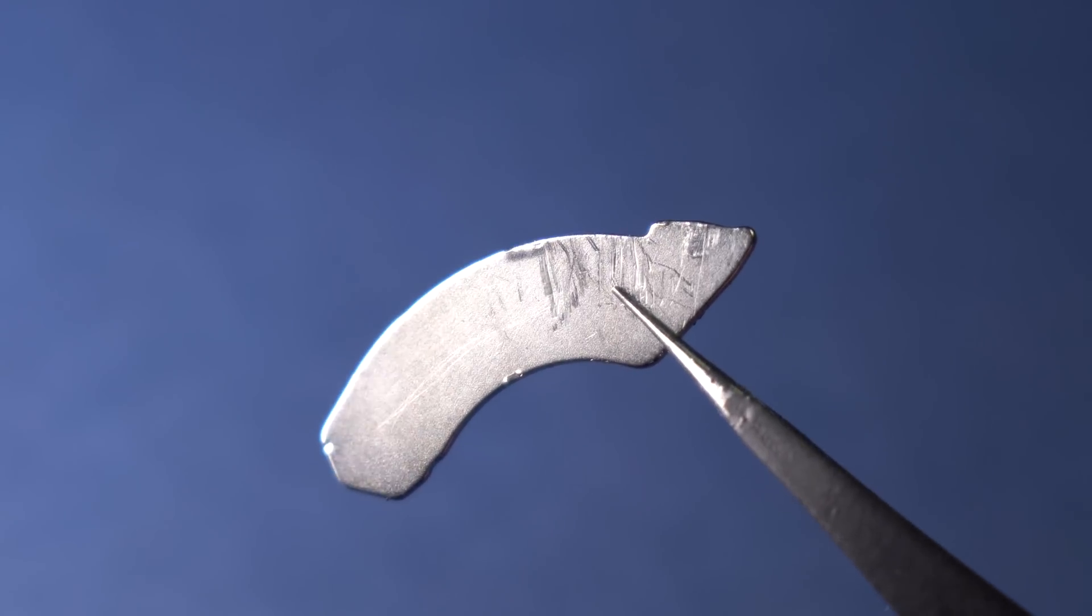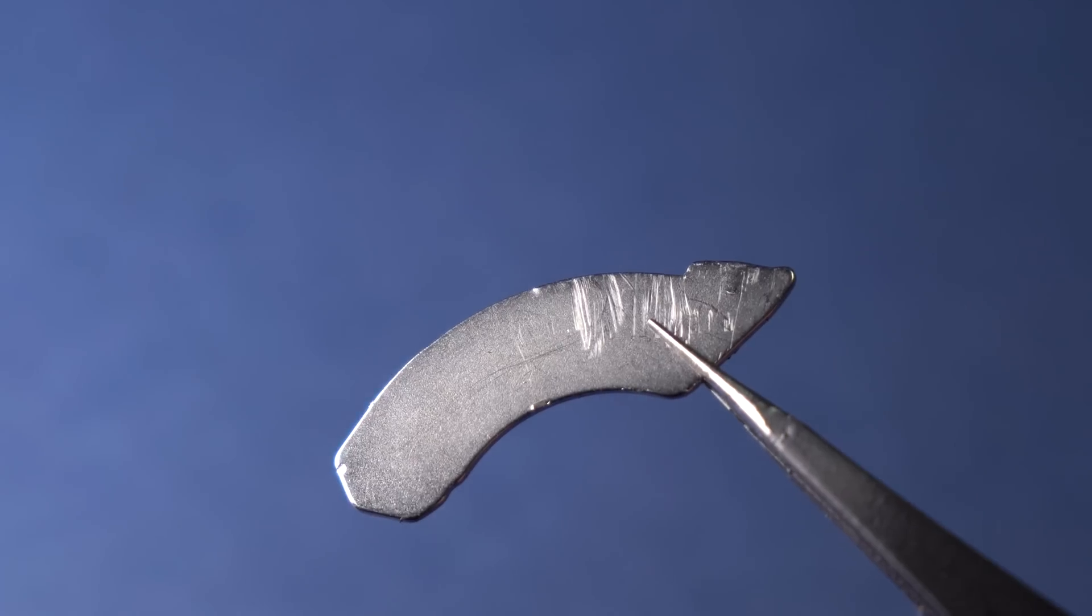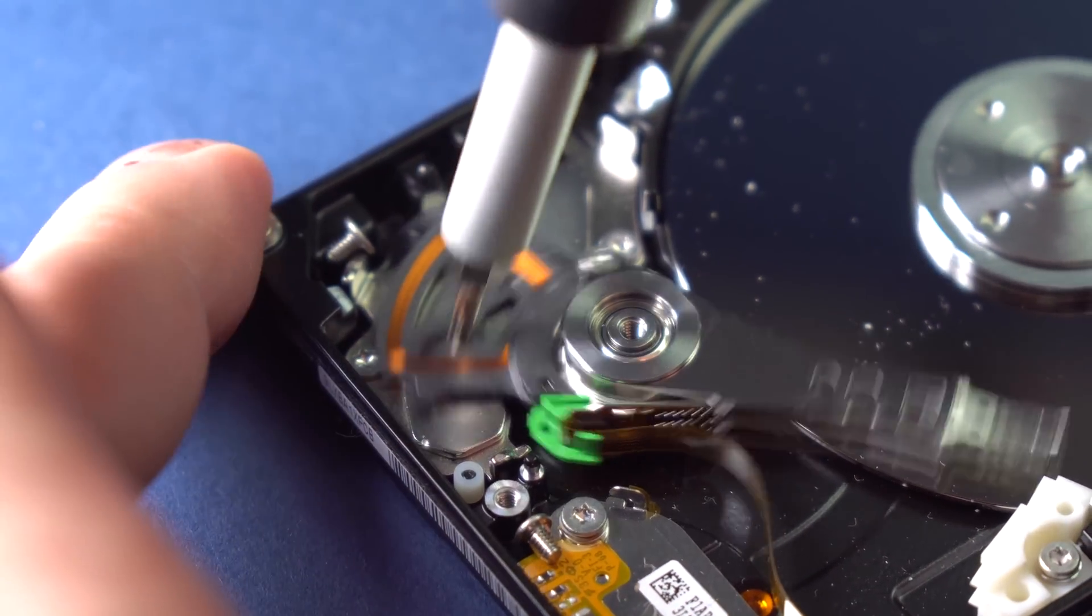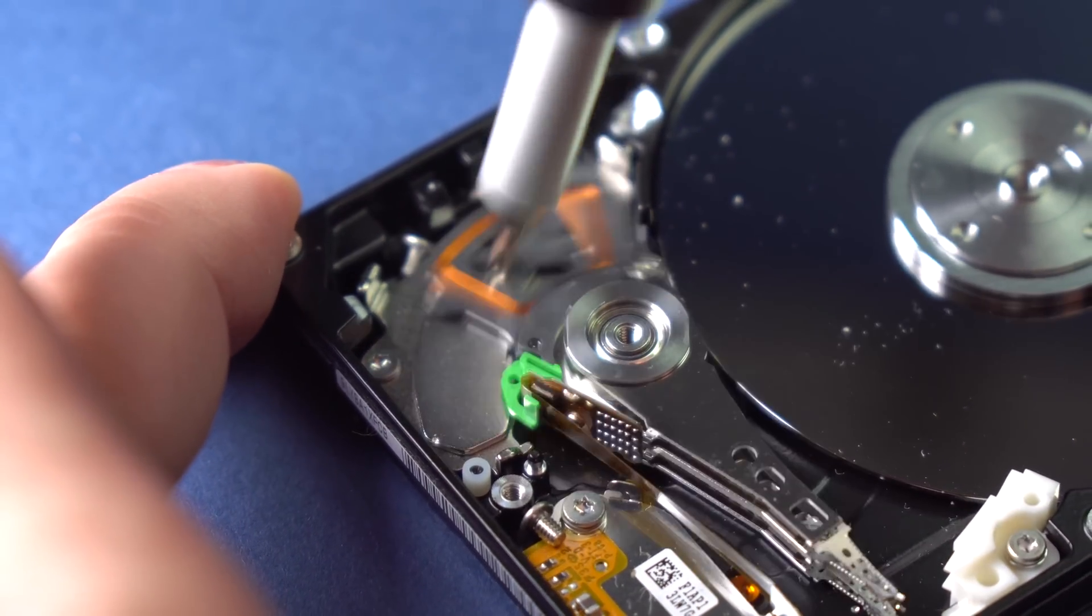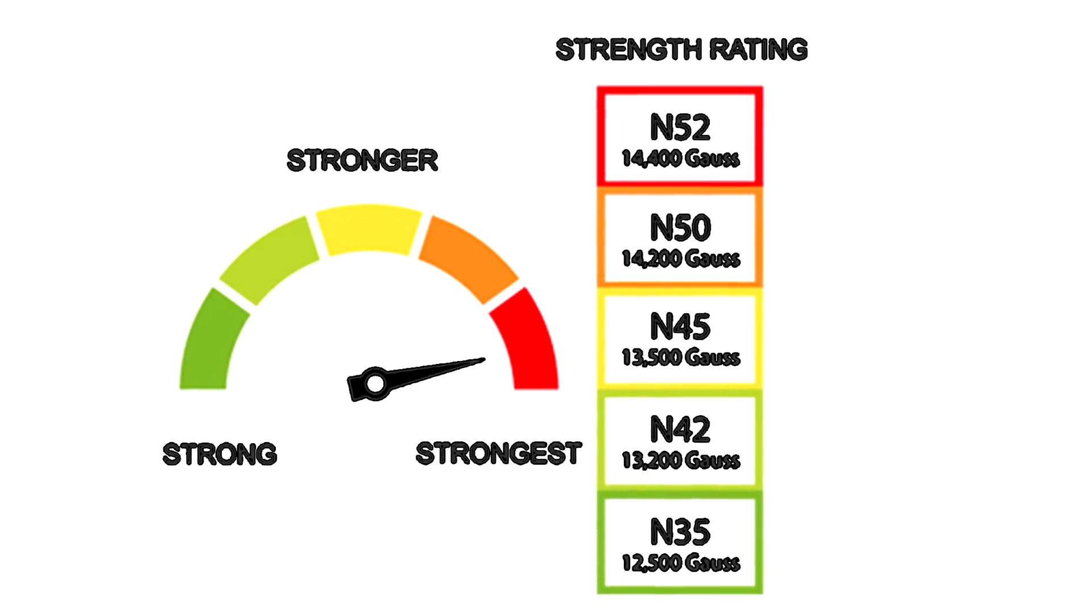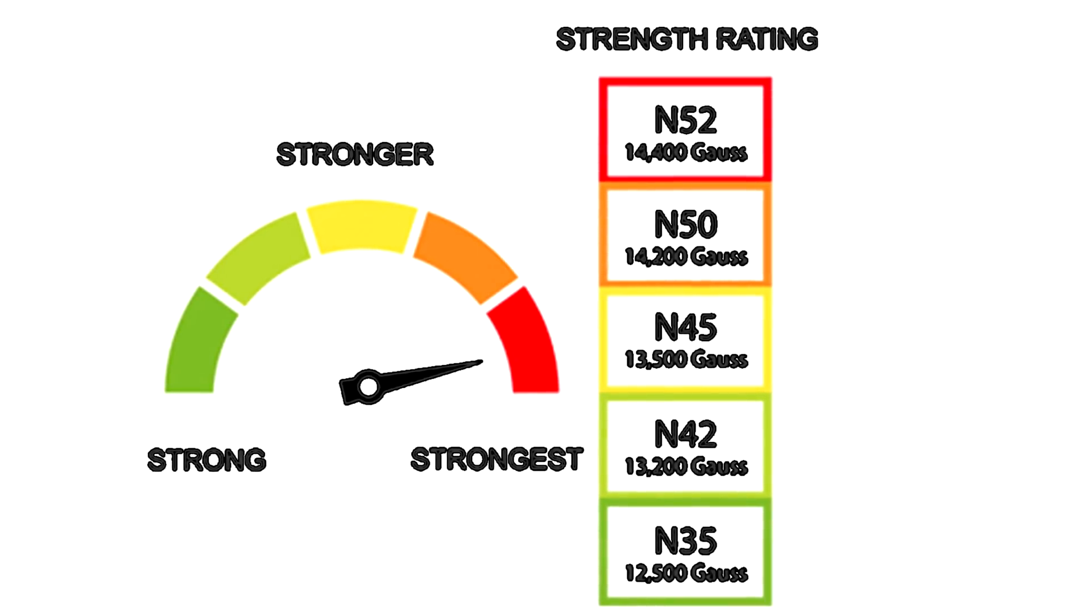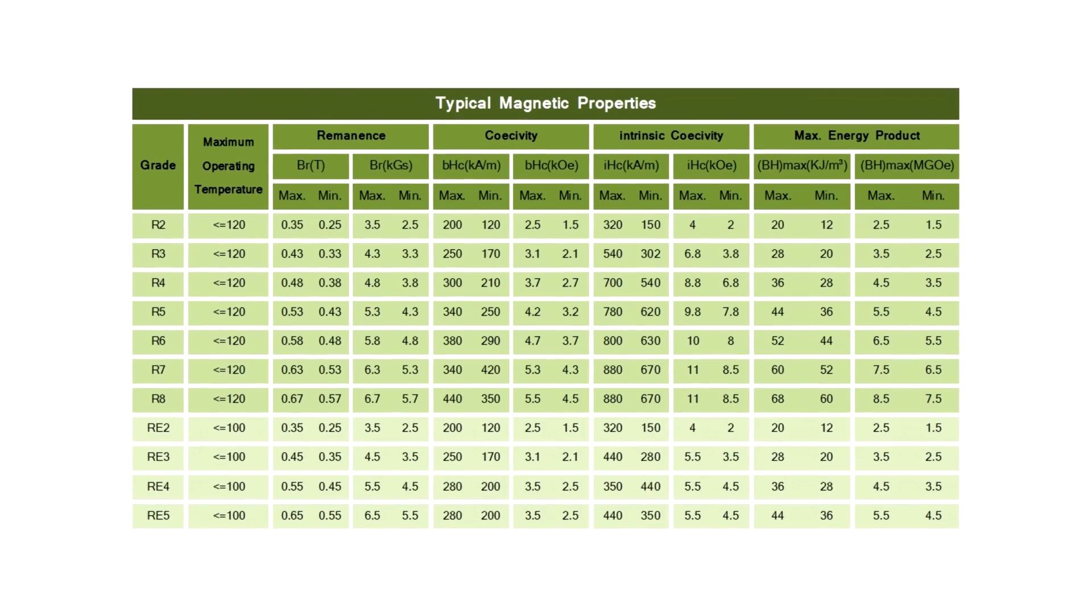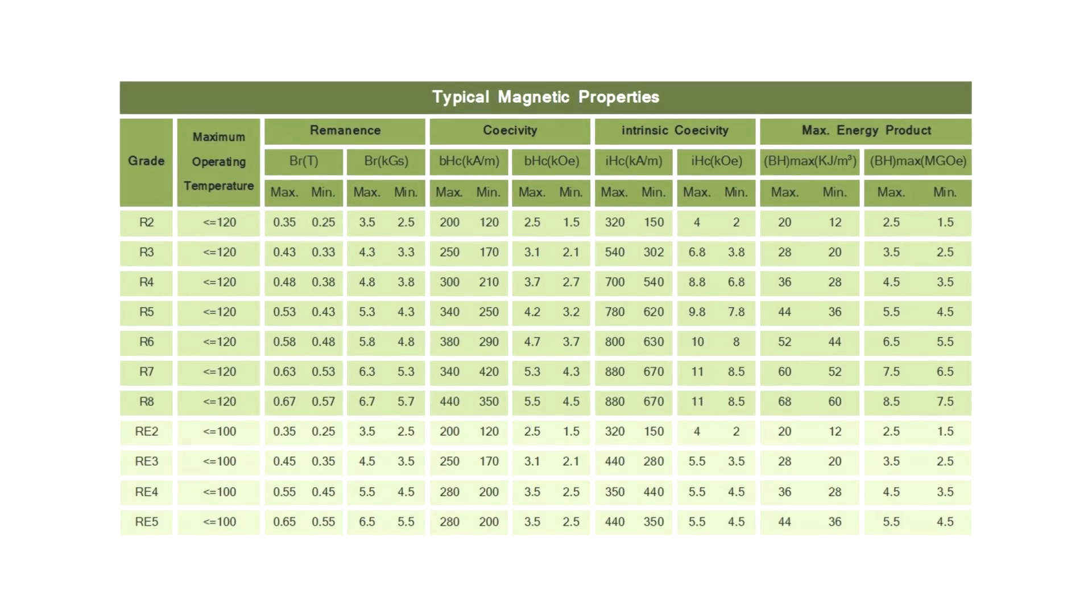However, science has advanced since then and modern neodymium magnets contain certain additives which make such magnets withstand heat above 200 degrees Celsius. They even have special symbols on them showing their magnetic force and Curie point.